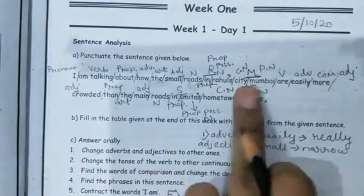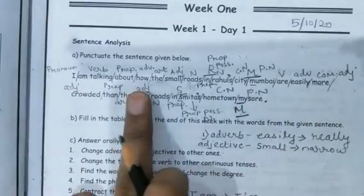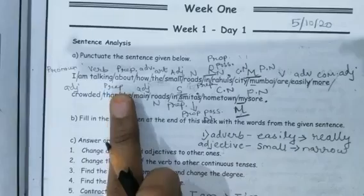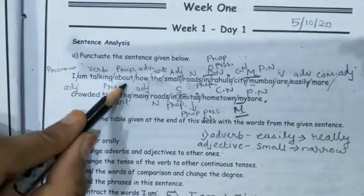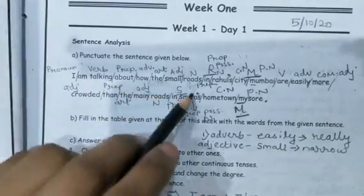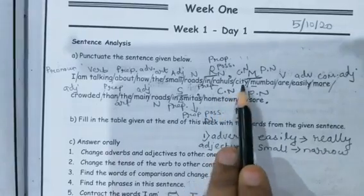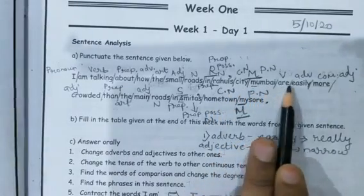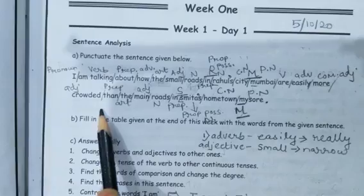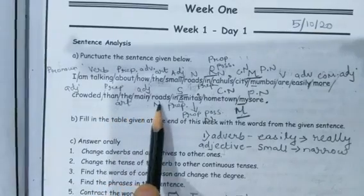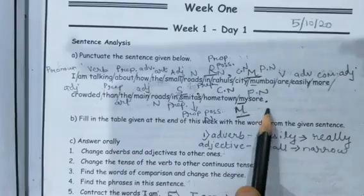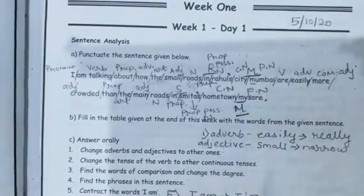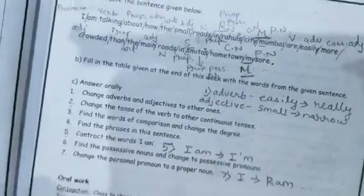You have to divide all the words and give the proper analysis for each and every word. Here you can see the sentence: 'I am talking about how these small roads in Rahul's city Mumbai are easily more crowded than the main roads in Smitha's hometown Mysore.' Here the cities given are Mysore and Mumbai.